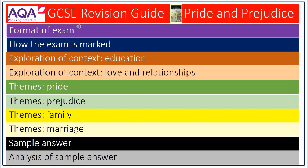To make it easier for some of you to skip straight to a particular area of weakness or interest, each slide is colour coded at the top and the timings for each section can be found within the description of the video. Purple explains the format of the exam. Blue shows how the exam is marked, including the descriptors from the top band mark scheme. Dark orange gives insight into the education system during Austen's time. Light orange gives some invaluable information about the very different landscape of love and relationships. Dark green explores the theme of pride. Light green: prejudice. Yellow looks at the theme of family, whilst light yellow explores the theme of marriage. Finally, the sample answer has a black header, which becomes grey when this response is analysed and related to the mark scheme.